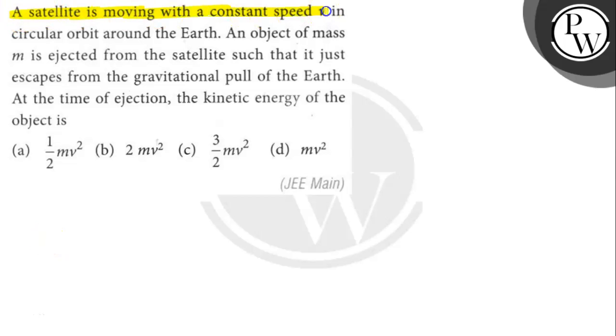A satellite is moving with a constant speed v in circular orbit around the Earth. An object of mass m is ejected from the satellite such that it just escapes from the gravitational pull of the Earth. At the time of ejection, the kinetic energy of the object is what we need to find.